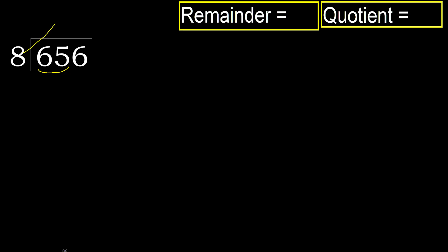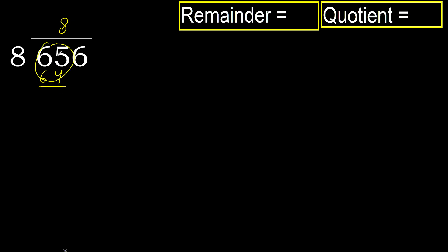8 multiplied by which number is nearest to 65 but not greater? 8 multiplied by 9 is 72, which is greater. 8 multiplied by 8 is 64, which is not greater. Subtract: 65 minus 64 is 1.